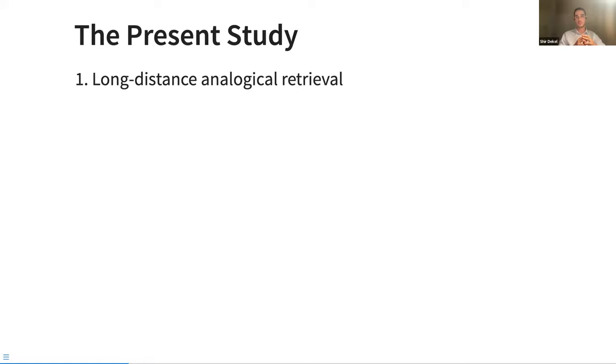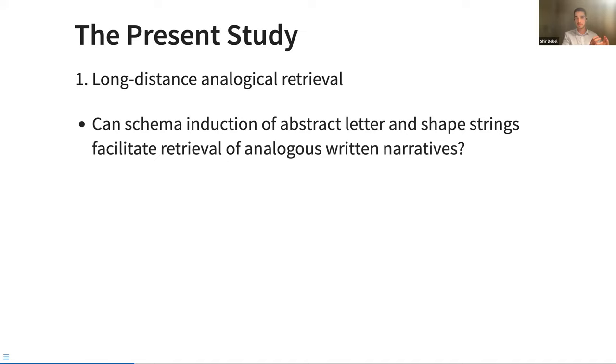And so that's what we did in this work, looked at long distance analogical retrieval, retrieval across domains that are further than just from one story to another story. Something even further out has been some work with mathematical transfer between narratives and mathematics as well. We used written narratives like have been done in the past and more abstract representations using letter strings and shapes. And secondly, we looked at multiple levels of abstraction: surface, first order, and higher order relations.